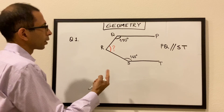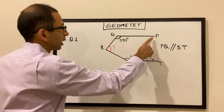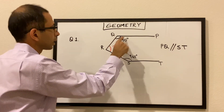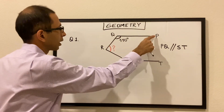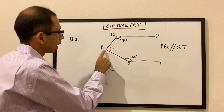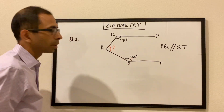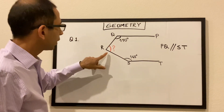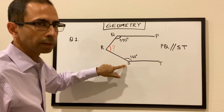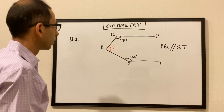So we have a situation PQRST. Line PQ is parallel to line ST. This angle here, angle PQR, is given to be 110 degrees. Angle RST is given to be 145 degrees, and we have to find this angle essentially — angle QRS. So this is the angle we have to find.